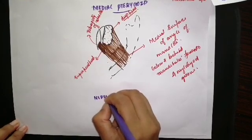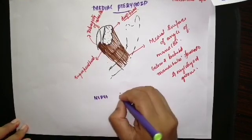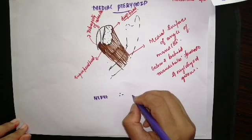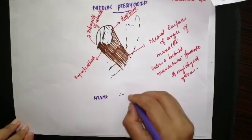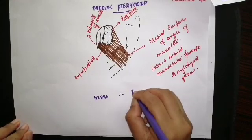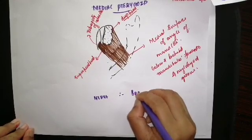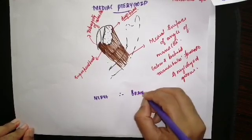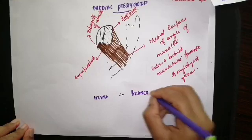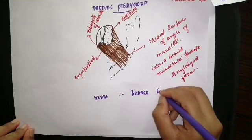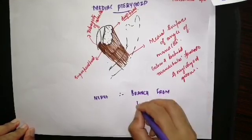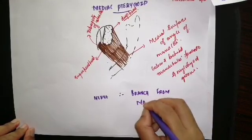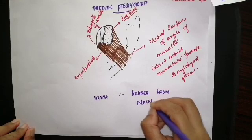As against all the other muscles, the medial pterygoid receives its nerve supply from a branch from the main trunk of the mandibular nerve.